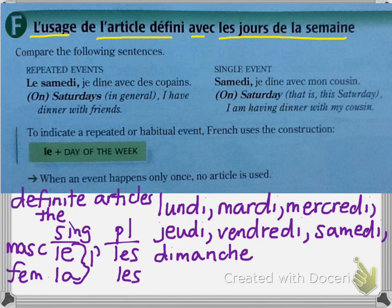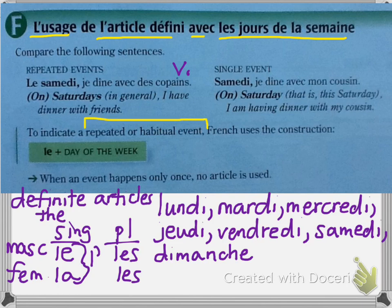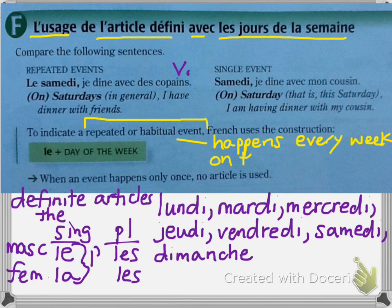We're talking about definite articles, and it says compare the following sentences for repeated events versus single events. Le samedi, je dîne avec des copains — meaning every Saturday I have dinner with friends — versus a single event: samedi, je dîne avec mon cousin — this one Saturday I'm having dinner with my cousin.